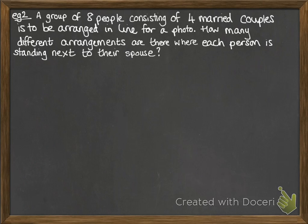Example number two. A group of eight people made up from four married couples is to be arranged in a line for a photo. How many different arrangements are there where each person is standing next to their spouse?